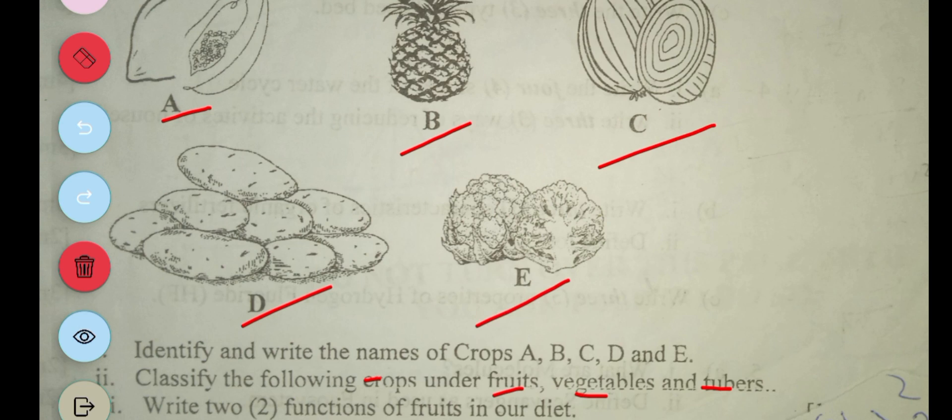Then it says: write two functions of fruits in our diet. So first of all, fruits help to give us nutrients, specifically vitamins mostly. And also fruits serve as fiber, which helps in the freeing of bowels.